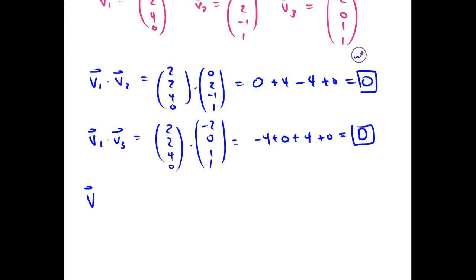And then we show that V2 and V3 are orthogonal. We dot 0, 2, negative 1, 1, with negative 2, 0, 1, 1.